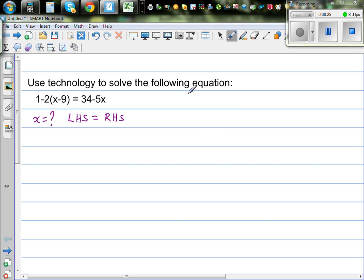Suppose x is equal to 0. What's your left hand side? Your left hand side would be 1 minus 2 times 0 minus 9, which is 1 minus 2 times negative 9. You should know the maths before you use the technology. So this is 1 plus 18 is 19.